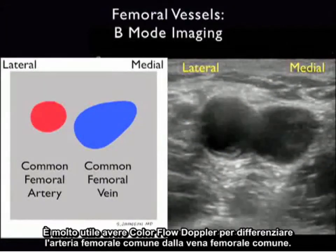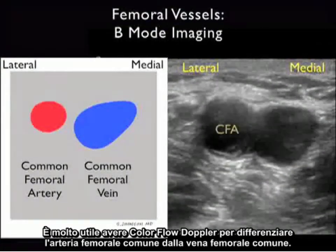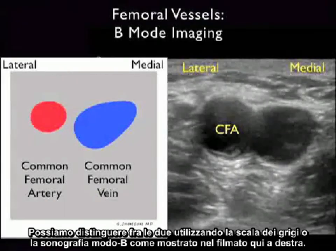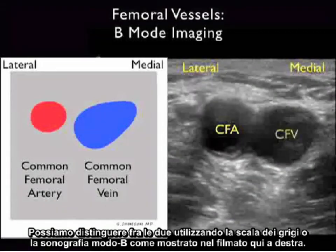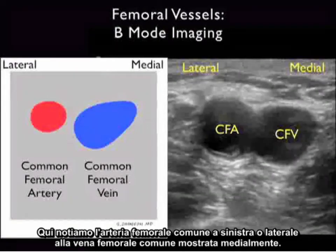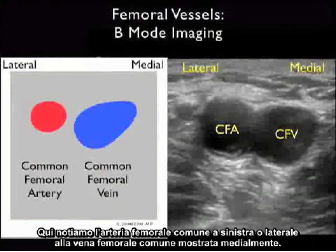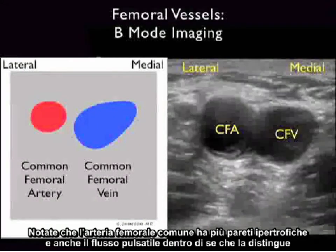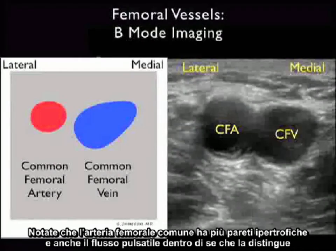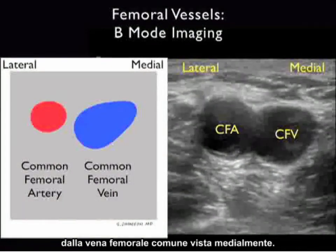While it's very nice to have color flow Doppler to differentiate the common femoral artery from the common femoral vein, we can also discern the two using grayscale or B-mode sonography. We note the common femoral artery to the left or lateral to the common femoral vein. Notice that the common femoral artery has more hypertrophic walls and pulsatile flow within it, differentiating it from the common femoral vein seen medially.